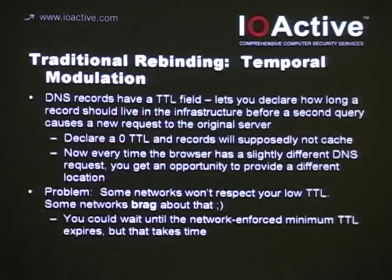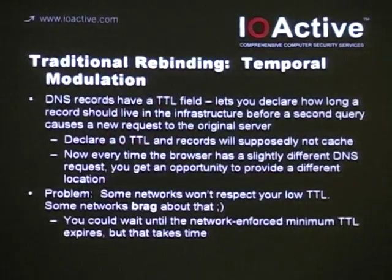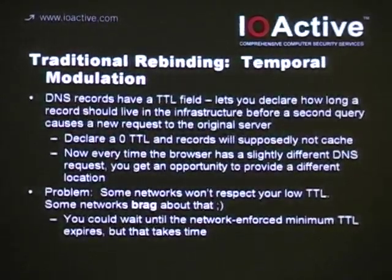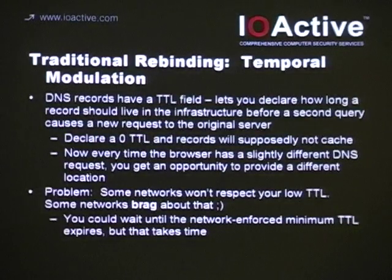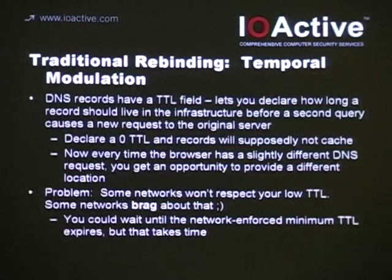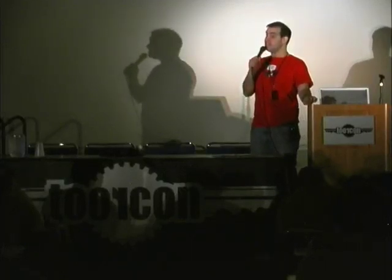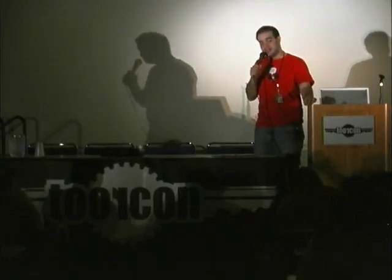The first way is called temporal modulation. When you get a record back from DNS, it's got a time to live. It says this value you should hold on to for this many seconds. And that value can be zero. The first time you look it up, you get an address. The second time you look it up, don't cache it — it might have changed. Get an address. Third time, don't cache it, it still might have changed. Go look it up.